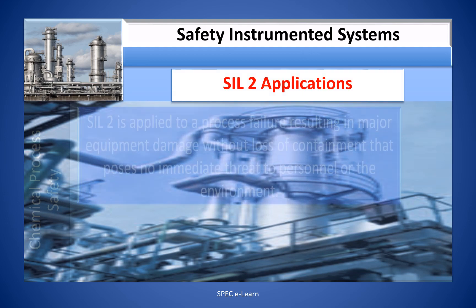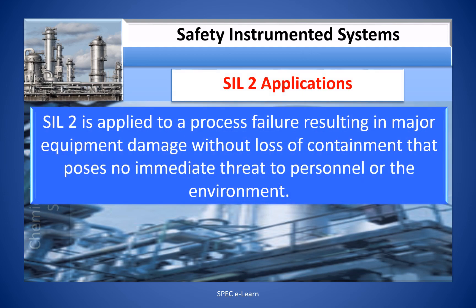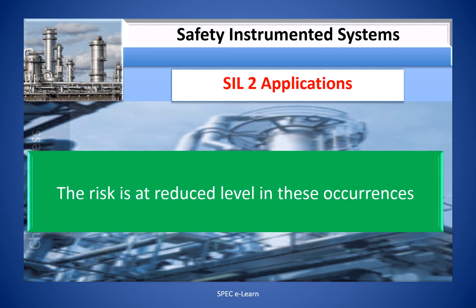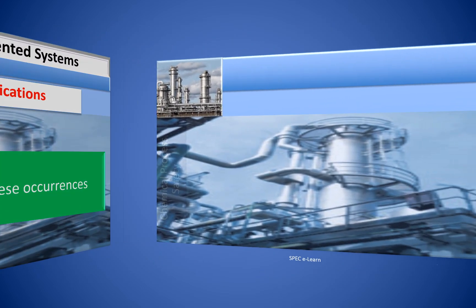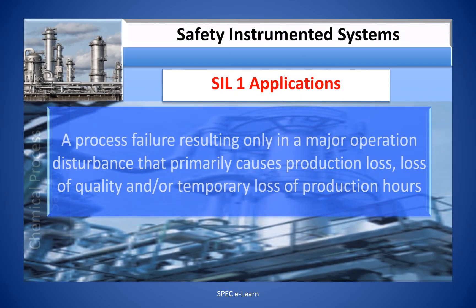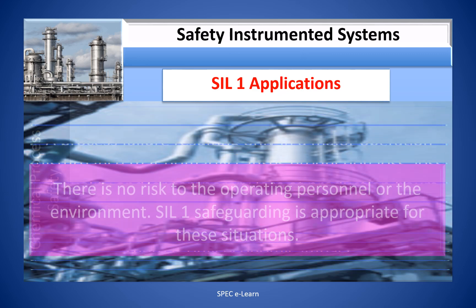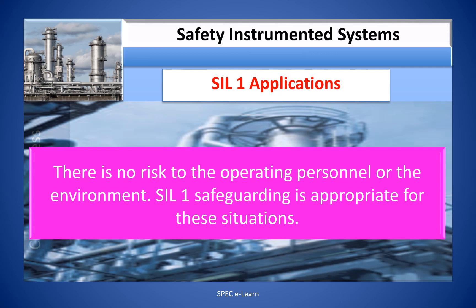SIL 2 examples: SIL 2 is applied to process failures resulting in major equipment damage without loss of containment that poses no immediate threat to personnel or the environment. The loss is primarily economic due to equipment repair or replacement and planned downtime, with the risk at a reduced level. SIL 1 examples: a process failure resulting only in a major operational disturbance that primarily causes production loss, loss of quality, or temporary loss of production hours. There is only economic impact with no risk to operating personnel or the environment. SIL 1 safeguarding is appropriate for these situations.